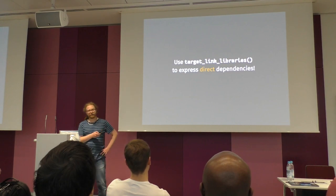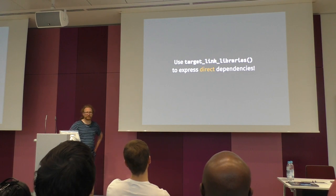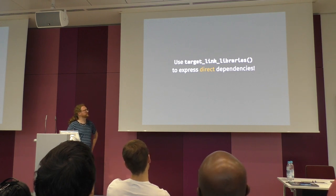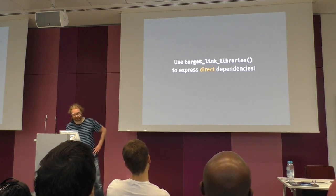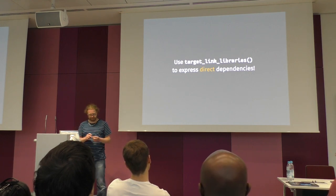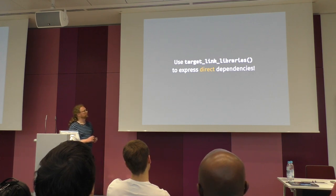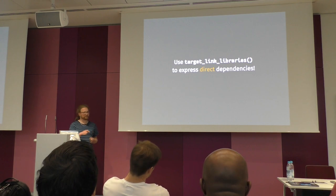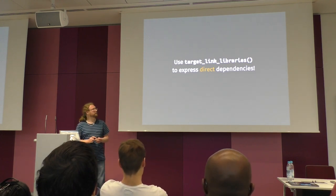target_link_libraries is a little bit wrongly named for historical reasons — in the past it really only affected link libraries. But today it also affects transitive requirements. It actually means one target depends on a library, so all include directories etc. are transitively propagated to dependent libraries. Therefore, you only need it for direct dependencies, because all transitive dependencies will be populated by CMake.